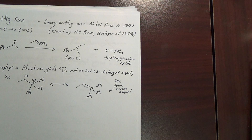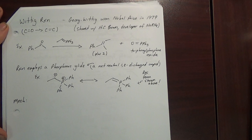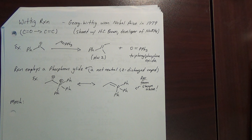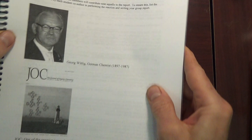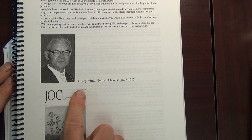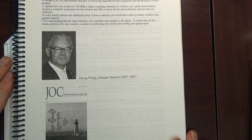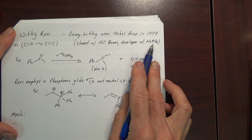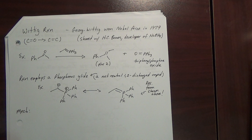Let's look at the Wittig reaction. The Wittig reaction was discovered and developed by George Wittig, who won the Nobel Prize in 1979 for his work developing this chemistry. There's a Wittig reaction in the lab manual that shows a photo of Wittig, a German chemist. He actually shared the Nobel Prize that year with H.C. Brown, who developed sodium borohydride. The Wittig reaction essentially converts a carbonyl to an alkene.